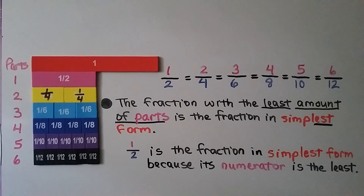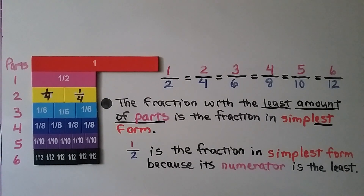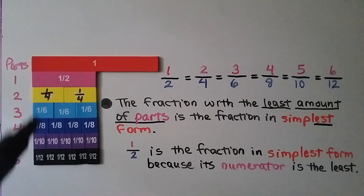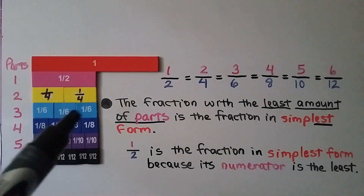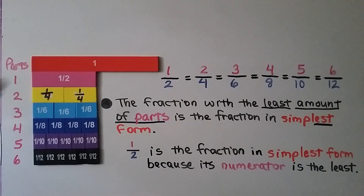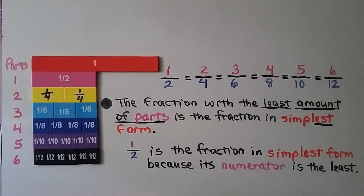One-half only has one part, so one-half is the fraction in simplest form because its numerator is least. They're all the same length — all equivalent to each other. Three-sixths is the same thing as one-half, but one-half only has one part, so that's in simplest form.